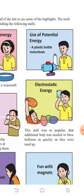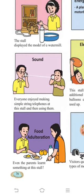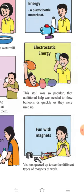Third was sound — a very simple experiment you may have done at home: taking two cups, making holes, passing a thread through them, and speaking from one side so the other person can hear. Everyone enjoyed making simple string telephones at this stall. Fourth was electrostatic energy — static electricity: when you rub a balloon on dry hair it gets charged, and if you bring it near pieces of paper, the paper sticks to the balloon.